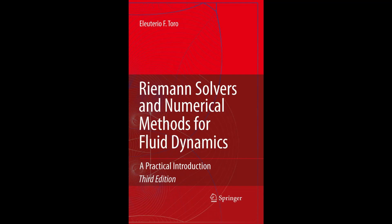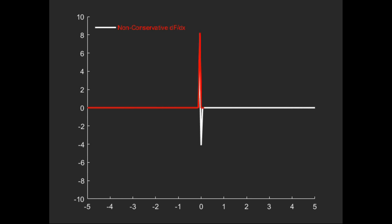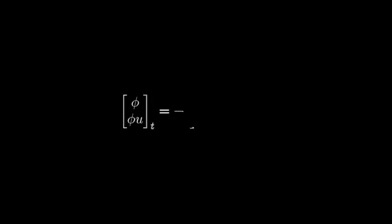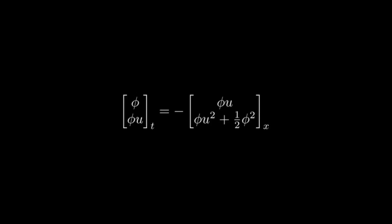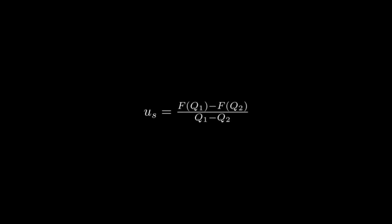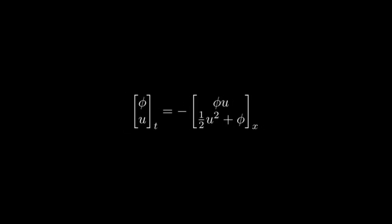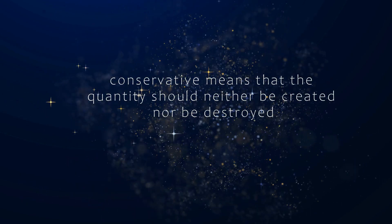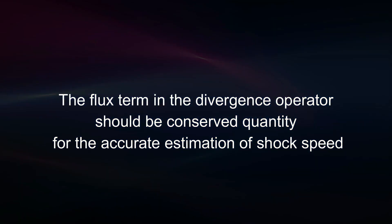This is an interesting test case from Professor Toro's book. We already saw that conservative discretization predicts shock speed better than non-conservative discretization. However, a conservative scheme may not predict shock speed well if the conserved quantity is not physically a conserved quantity — illustrated using the shallow water problem. Both forms of the one-dimensional shallow water equation are in conservative form because the flux term is in the divergence operator, but they produce different shock speeds using the Rankine-Hugoniot condition. The flux term in the first equation is a conserved quantity, but in the second it is not. The flux term in the divergence operator must be a conserved quantity for accurate shock speed estimation.